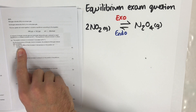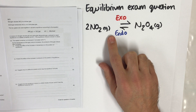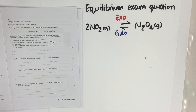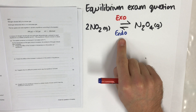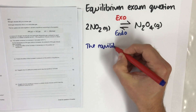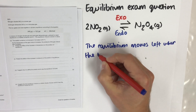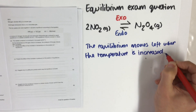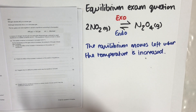The first thing they want you to predict is the effect of the increase in temperature on the position of this equilibrium — whether it's going to move to the left or to the right. If you increase the temperature, the equilibrium will move to oppose the change that's been put upon it, meaning it will do more of the endothermic reaction. So the equilibrium moves left when the temperature is increased, producing more NO₂ gas.